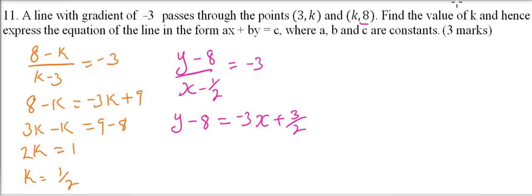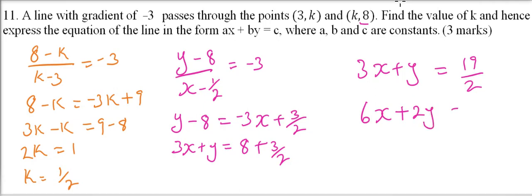Bringing terms to the other side, we have 3x + y = 8 + 3/2. When you sum this up, you get 3x + y = 19/2. Multiply throughout by 2, so you have 6x + 2y = 19.